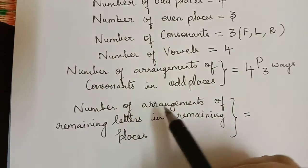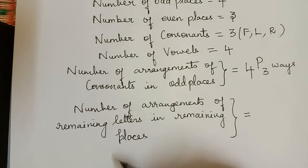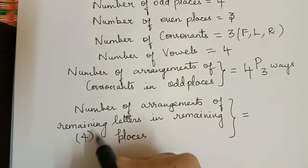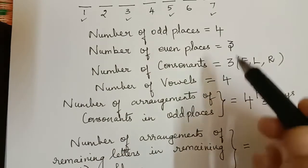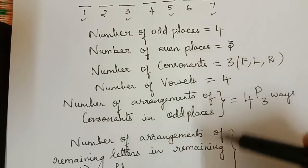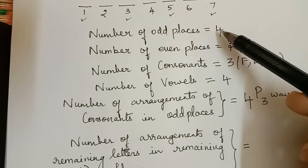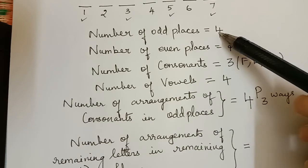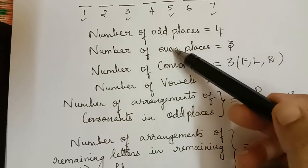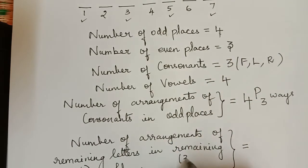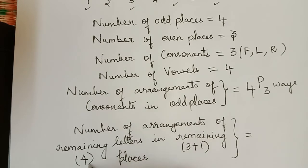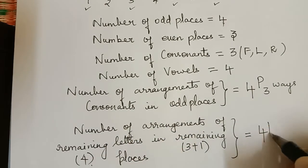Next, let us arrange the remaining letters in the remaining places. The remaining letters are the 4 vowels. The remaining places are the 3 even places plus the 1 odd place left unfilled (since there are 4 odd places but only 3 consonants), giving 4 remaining places in total. So these 4 places are filled with 4 letters, which can be done in 4P4 ways.